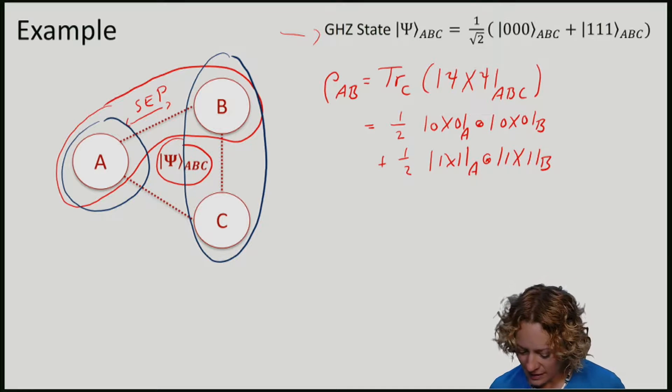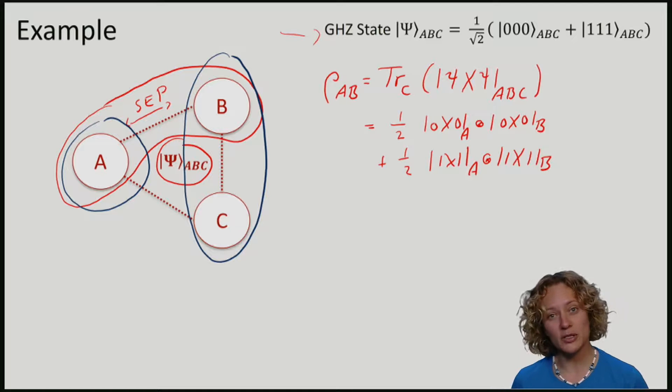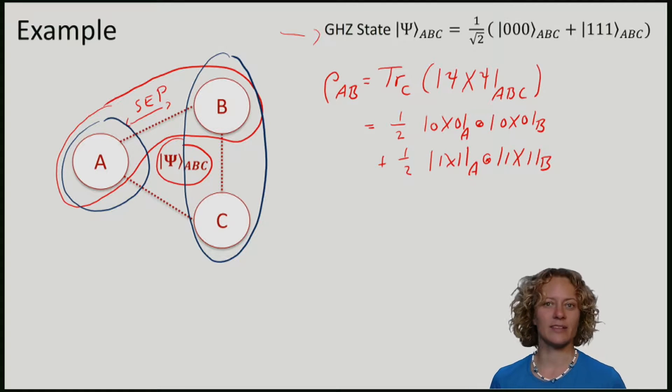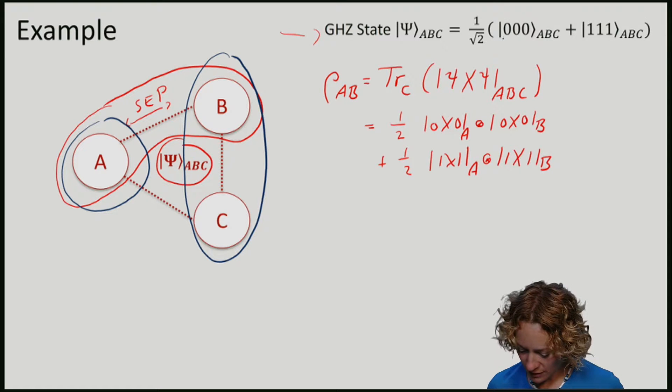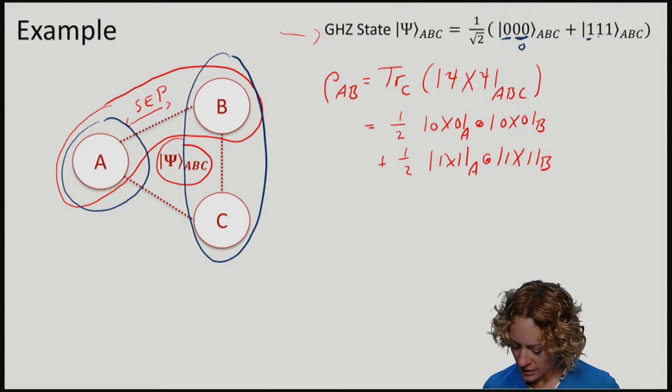We can easily see this by noting that if I bunch B and C together, then the state is very similar to the EPR pair. If I have 0 on A, I have also 0 together on B and C. And if I have 1 on A, I have 1 on B and C.